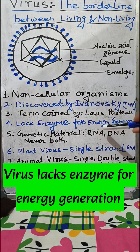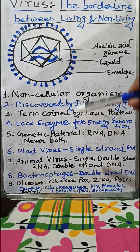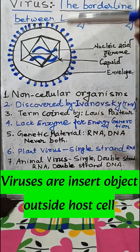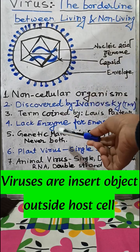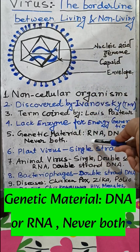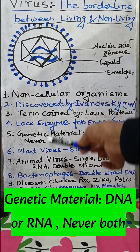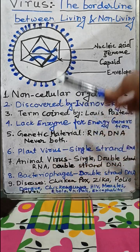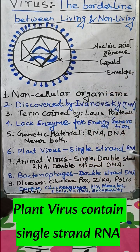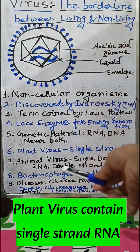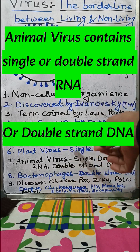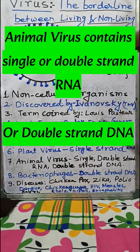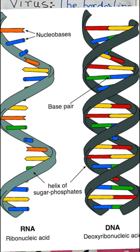Virus lacks the enzyme which is necessary for energy generation, and this lack of enzyme makes it an inert object outside the host cell. The genetic material found in a virus is either RNA or DNA — never both. Plant virus is mainly single-stranded RNA, and animal virus can be single or double-stranded RNA or double-stranded DNA.